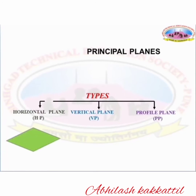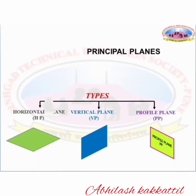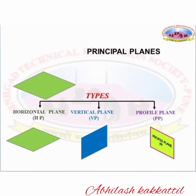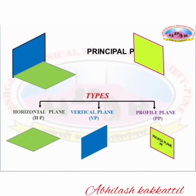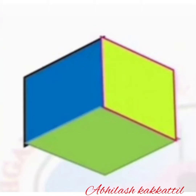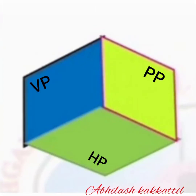These are the three principle planes: the horizontal plane HP, the vertical plane VP, and the profile plane PP. The top view, also called the plan, is formed on the HP. The front view, also called the elevation, is formed on the VP. The profile view, also called the end view or side view, is formed on the PP.